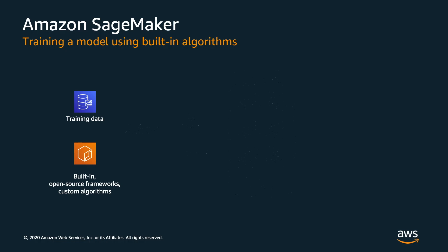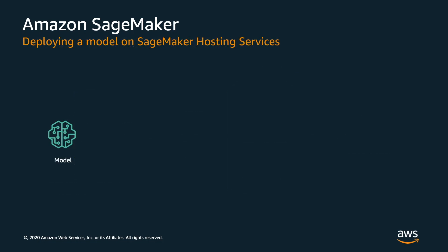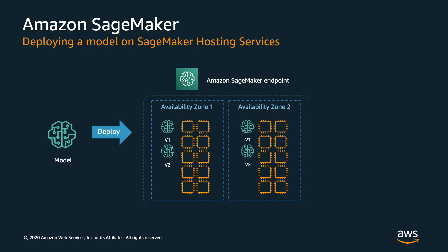When we create a training job, SageMaker launches the ML compute instances and trains the model using the training dataset in our Timestream table. This results in model artifacts, which we would then use in our endpoint. After we train our model, we can deploy a persistent endpoint using SageMaker hosting services, deploying it using the model artifacts produced by our training job. This gives us a simple, RESTful interface that applications can use to get inferences from the model. In our exercise, we'll send requests to this endpoint from the SageMaker notebook to emulate a client application.